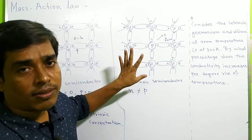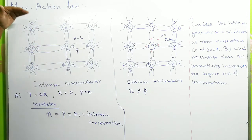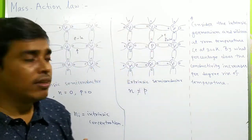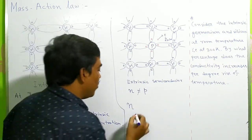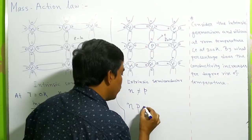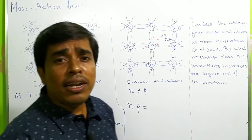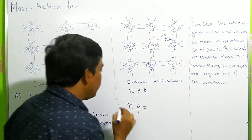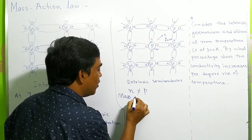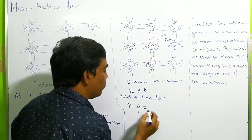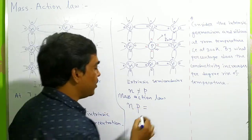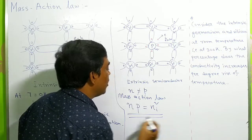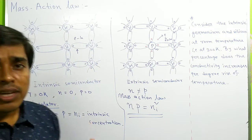The statement of mass action law is: under thermal equilibrium, the product of negative and positive charge concentrations is constant and independent of the number of donor or acceptor impurity dopings. According to mass action law, we can write n times p equals ni squared, where ni is the intrinsic concentration. This is the mass action law.